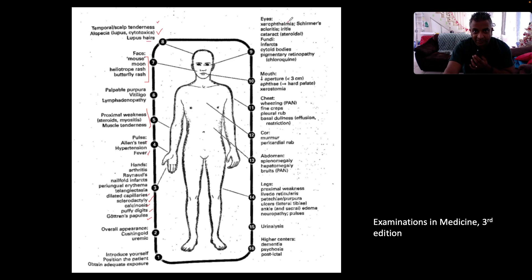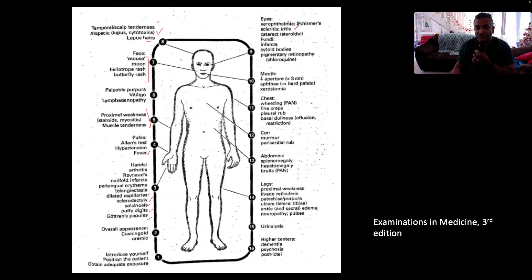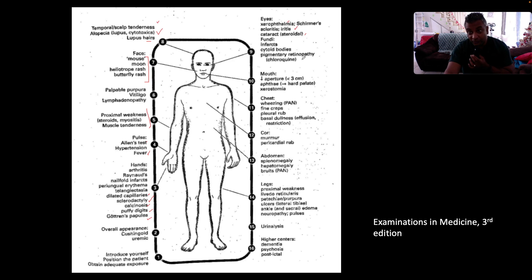Looking at the eyes, you have xerophthalmia, which is dry eyes. Do a Schirmer's test if there is concomitant Sjögren's syndrome. Look for scleritis, episcleritis, and neuritis. The difference between scleritis and episcleritis is that episcleritis will blanch when you ask the patient to close and open their eyes, but scleritis does not. Look for cataracts. Look into the fundi for infarcts from cytoid bodies and pigmented retinopathy, which could be on the back of chloroquine use — one of the immunosuppressive agents used in lupus.